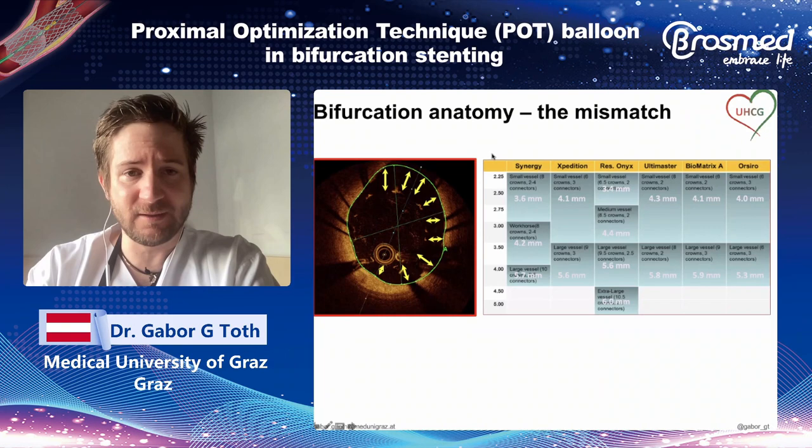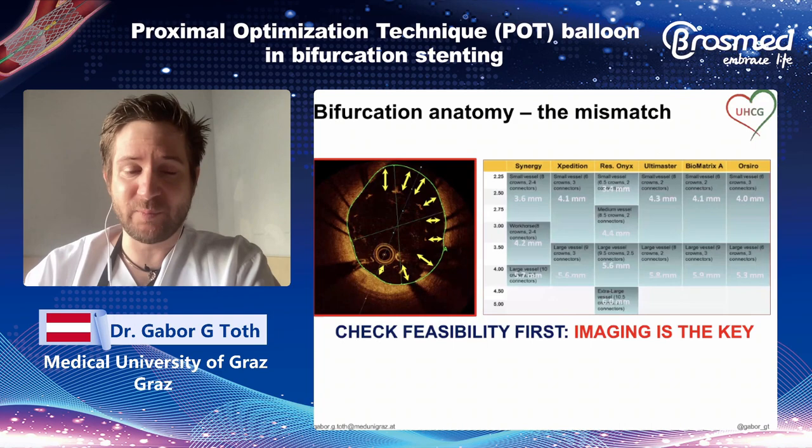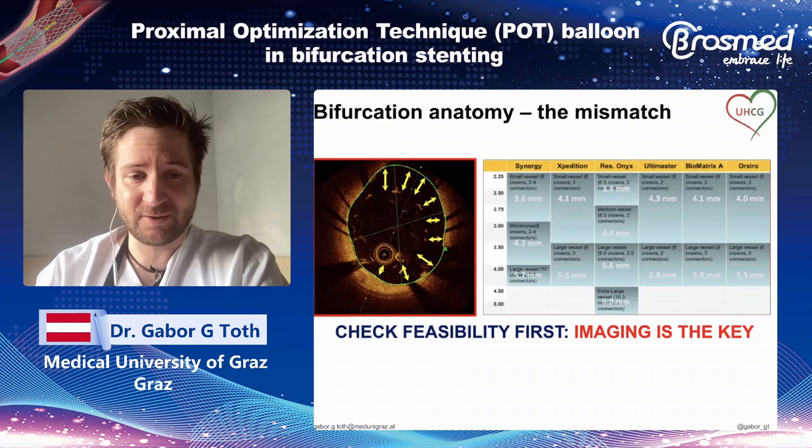When you choose your stent according to the distal branch diameter — for instance, 3.0 — you can easily go up to 4.5 in the main branch to correct the malaposition seen on the left side. It's very important to understand these diameters prior to stent implantation and stent selection in order to properly cope with this problem.